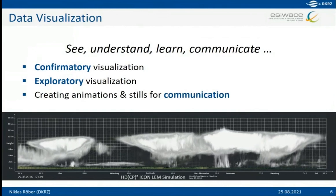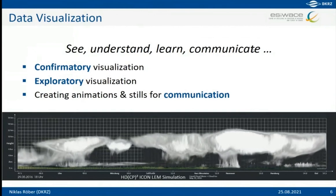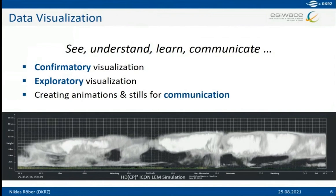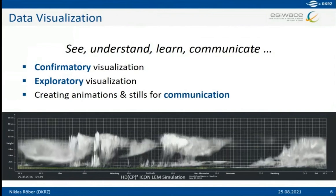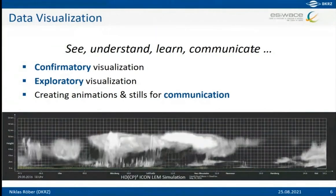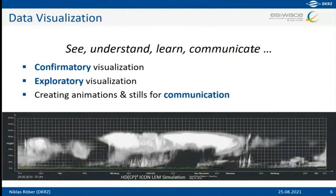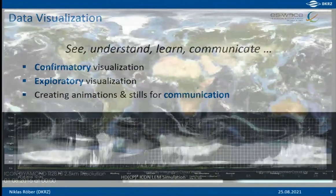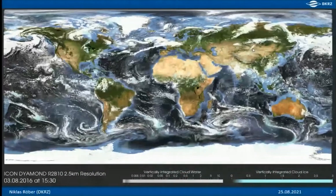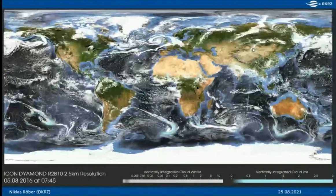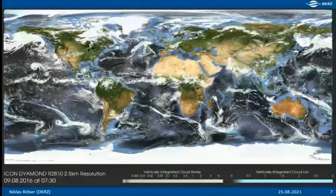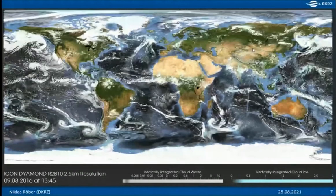If you're not sure what to find in the data, you'd like to explore it in the most interactive way possible — applying different color tables, thresholding, clipping — to see what features are hidden. In the end you'd like to create animations and stills to communicate your findings. Here's an animation done some years ago using an ICON run, showing a 2D visualization of vertically integrated cloud water and cloud ice.